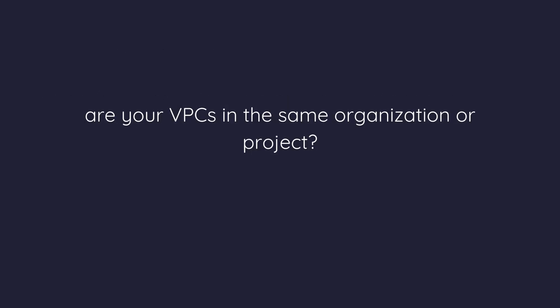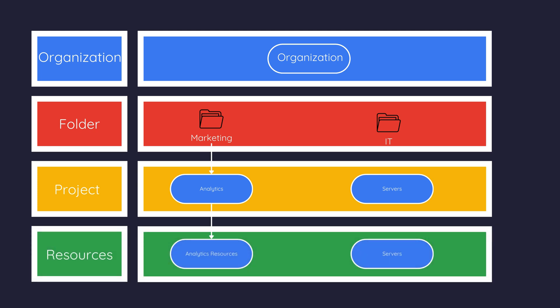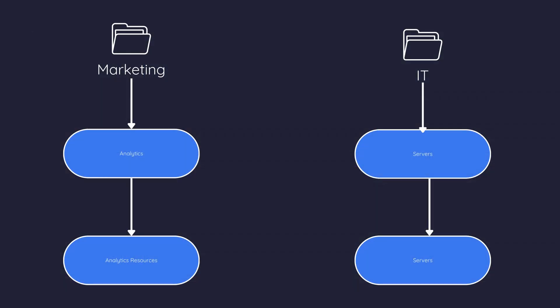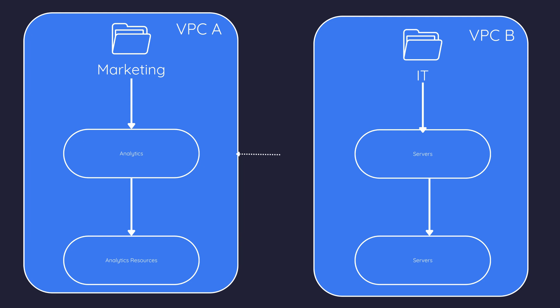Next, are your VPCs in the same organization or project? Let's say you're part of a company with two different teams — marketing and IT. Marketing is running some analytics on Google Cloud while IT manages the servers. Both teams belong to the same company, so their VPCs are under the same organization. If they need to communicate securely with private IPs, the simplest solution is VPC network peering.